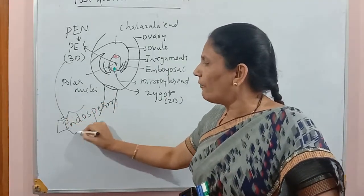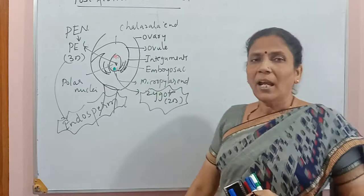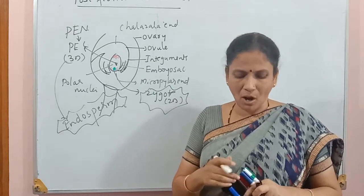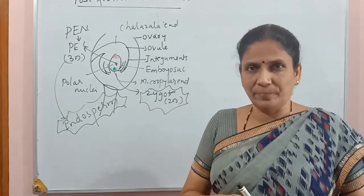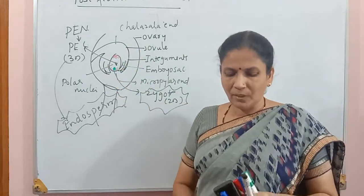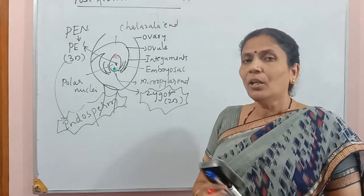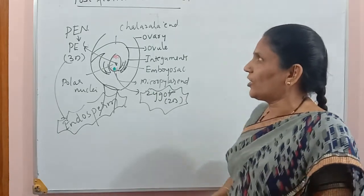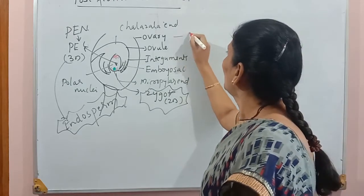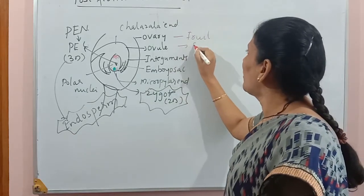Zygote formation and endosperm formation are two very important events taking place after fertilization. Along with this, there are many internal changes which also take place after fertilization. The ovary will become fruit after fertilization.